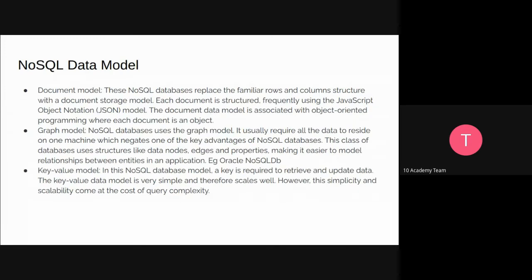So what are NoSQL data models? NoSQL databases are designed to break away from rows and columns of the traditional data model. Most people think they don't have a data model, but that's not true — a schema describing how the data will be organized is important. In NoSQL, we have three types of data models. The first is the document model — it replaces the familiar rows and columns and uses document storage. Each document is structured and frequently uses a JSON model. The document model is associated with object-oriented programming, where each document is treated as an object.